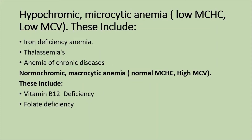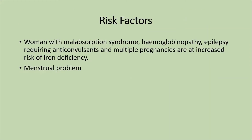Hypochromic microcytic anemia shows low MCHC and low MCV, representing iron deficiency anemia, thalassemia, and anemia of chronic disease. Normocytic and macrocytic anemia shows normal MCH and high MCV, representing vitamin B12 deficiency and folic acid deficiency.